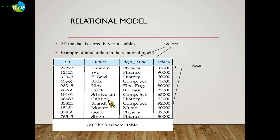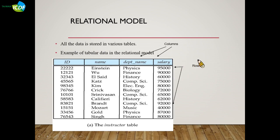Now let's take a look at the instructor table. In this table, there are four columns: ID, name, department name, and salary. These four columns represent the common attributes or properties owned by all instructors — these are the outcomes we abstract from the real world. Each row represents an instructor in the real world.